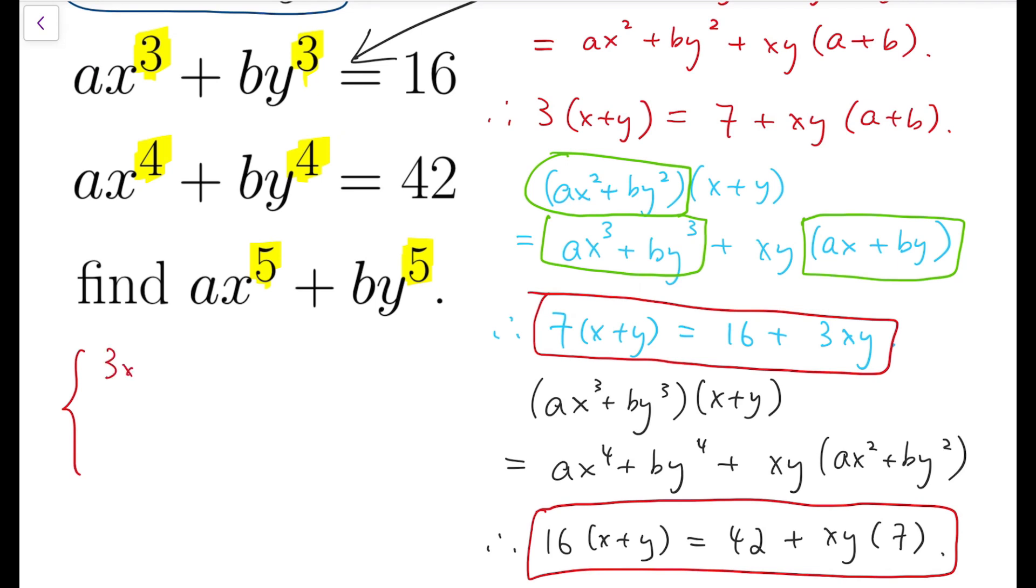So I can rewrite that as, maybe I should say that as 7 times (x + y) minus 3xy equals 16. Or the other equation as 16 times (x + y) minus 7xy equals 42. So now we can see that if I treat the yellow part and the blue part as an unknown then there are two equations in two unknowns so I can solve them.